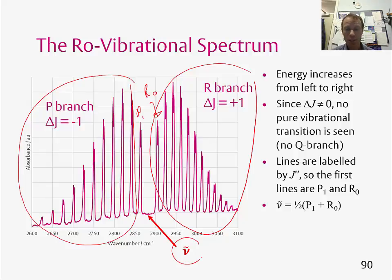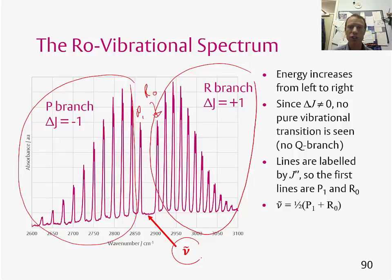From a ro-vibrational spectrum we can extract ν̃, and as with the rotational spectrum we can also obtain the rotational constant B, which allows us to calculate properties of the molecule.